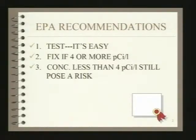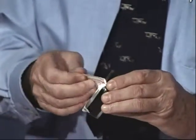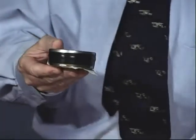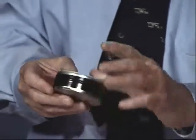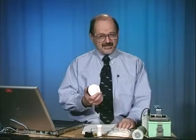We'll start with the EPA recommendations. First: test your house. It's very easy, and that is the truth. I have here a charcoal canister, a very common method of testing for radon in homes — it's hard to find anything easier. You peel off the tape off the top, deploy it in the appropriate place for a given amount of time, then reseal it, fill out a brief form with name, address, and deployment times, and send it to the lab. Your radon concentration will come back in the mail within a week or two.